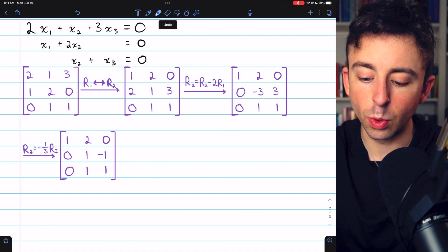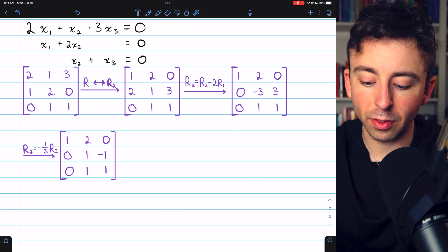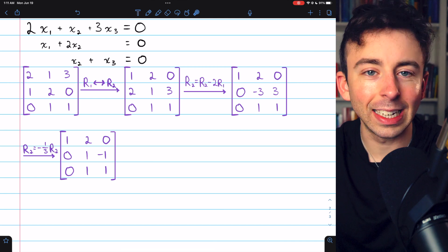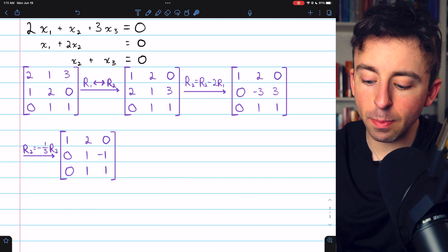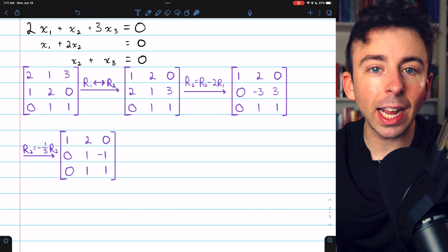in order to turn this entry below the leading 1 to a 0. We also have to subtract 4 from 1, which gives us that negative 3. Now, to turn this entry into a 1, we can multiply row 2 by negative 1 third, which isn't actually going to introduce any fractions because that plays nice with this other entry as well.